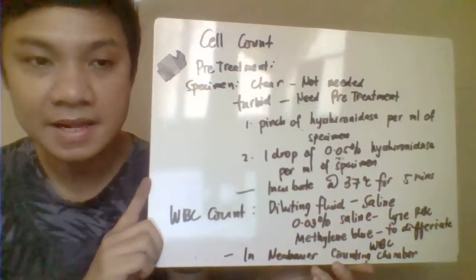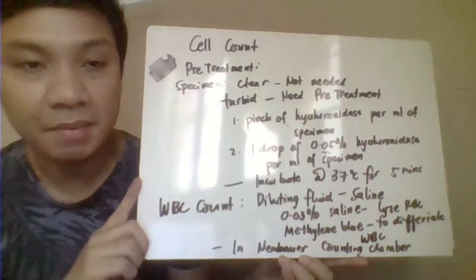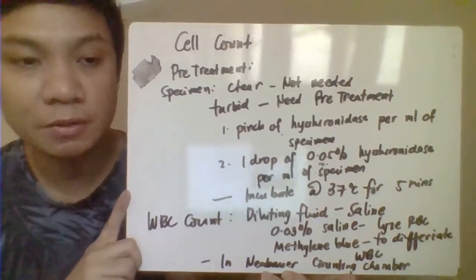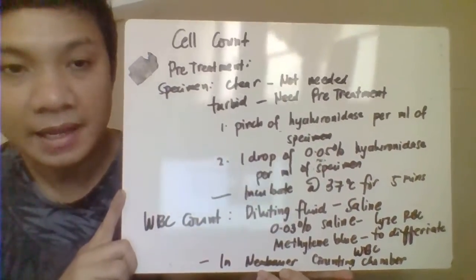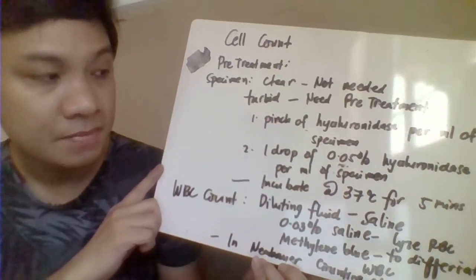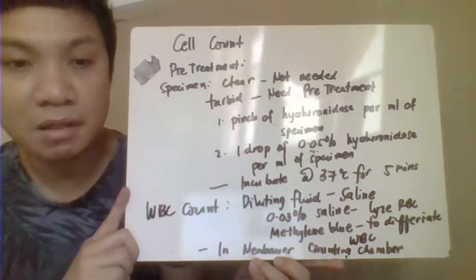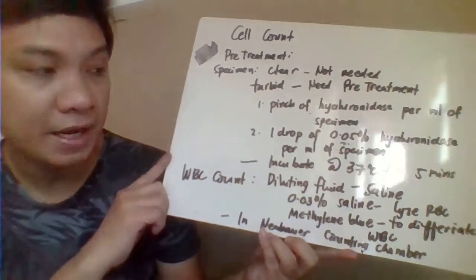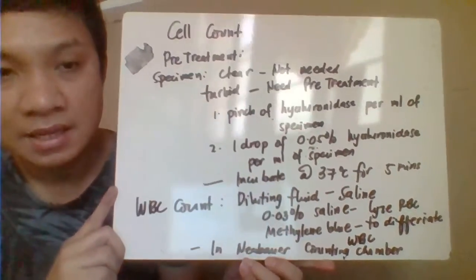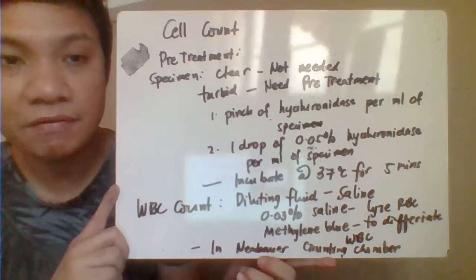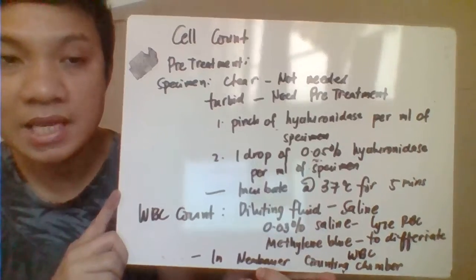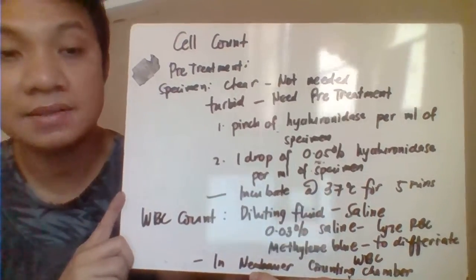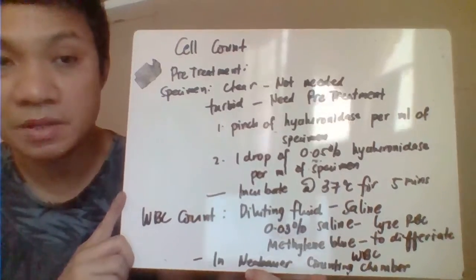For the cell count, we perform the WBC count. For specimen preparation: if the specimen is clear, no pretreatment is needed. If the specimen is highly turbid or cloudy, pretreat by adding a pinch of hyaluronidase per mL of fluid, or one drop of 0.05% hyaluronidase per mL of fluid, and incubate at 37 degrees Celsius for 5 minutes before proceeding with the WBC count. We do not use the routine WBC diluting fluid because it contains acetic acid, which could cause clotting. Therefore, replace the diluting fluid with NSS.